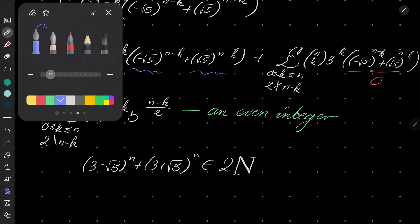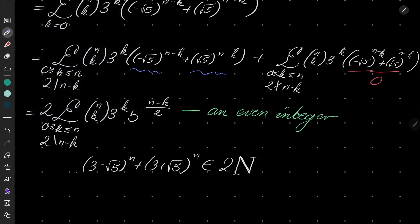But now, let's see. This number, let's notice it. This number is in the interval (0, 1) for every positive integer n. Because (3 - √5) is 3 minus 2 point something. It's a number between 0 and 1. And if we take a number between 0 and 1 to any power, it's always between 0 and 1.